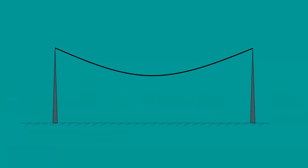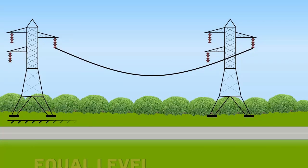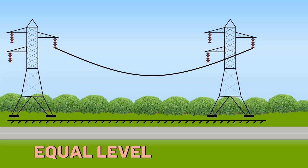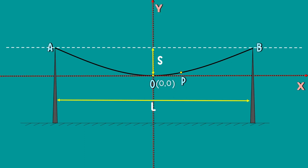Let's consider the weight per unit length of the conductor as W and L be the span. The tension at any point on the conductor acts tangentially. Let's first calculate the sag when the supports are at an equal level. Let's name the lowest point on the conductor as O and the sag as S. Consider a point P on the conductor. Taking the lowest point O as the origin, let the coordinates of point P be X and Y.